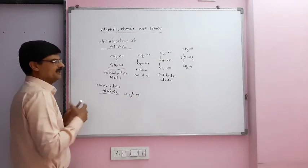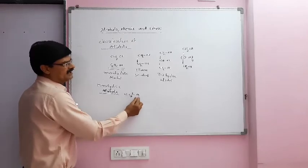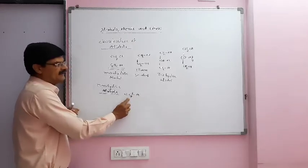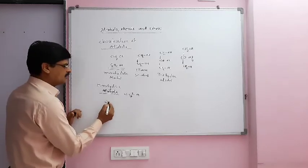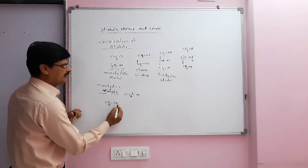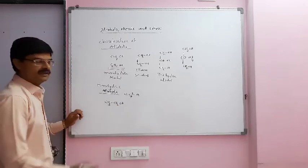Now, monohydric alcohols further classified according to hybridization present of carbon. First, we will see CSP3OH. CSP3OH means carbon which is attached to OH group is having SP3 hybridization. CH3OH.